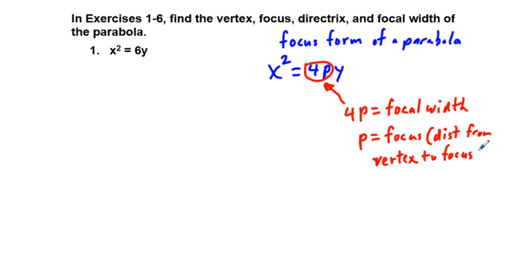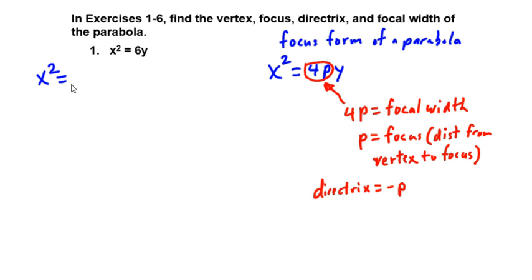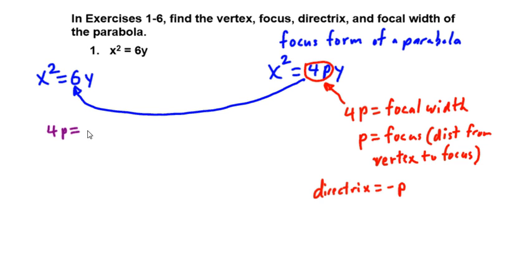The directrix is quantified by the negative of P, so the directrix is in the opposite direction of the focus from the vertex. In this form, we have X squared equals 6Y. In this instance, 4P is equal to 6. So I'm just going to write out the equation: 4P is equal to 6, and that's already our focal width.